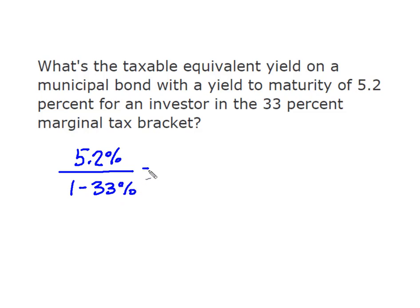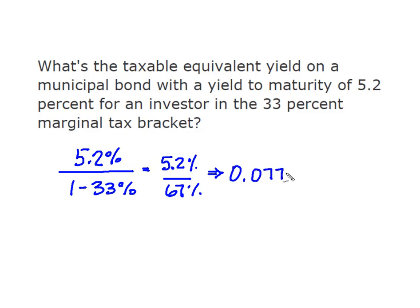So we end up with 5.2% divided by 67%, which results in a taxable equivalent yield of 0.0776, or 7.76%. Investors can use this equivalent yield to compare these municipal bonds to perhaps other bond options that they have.